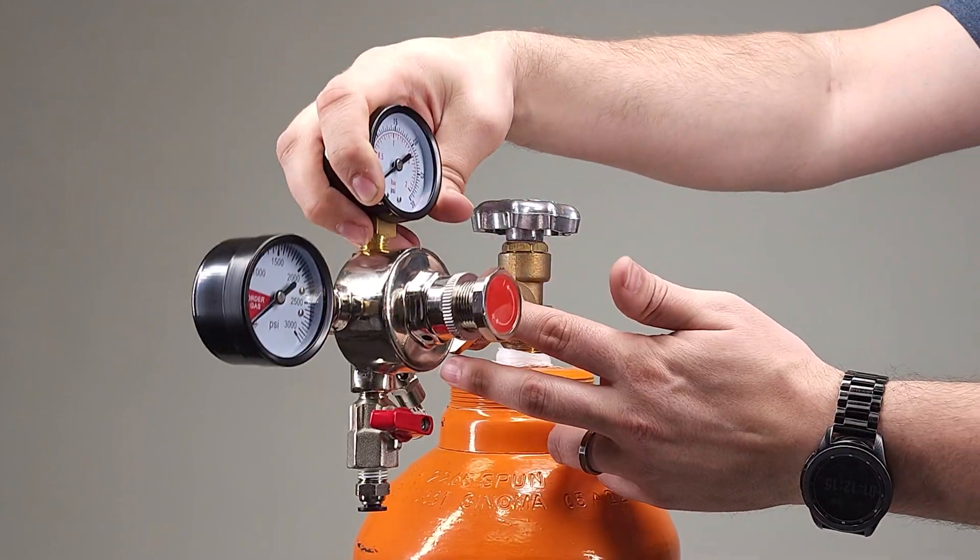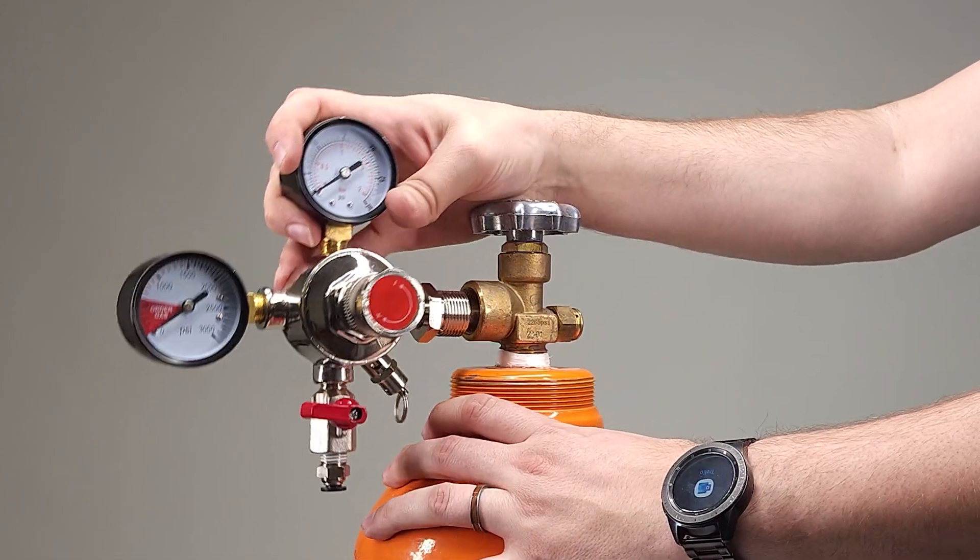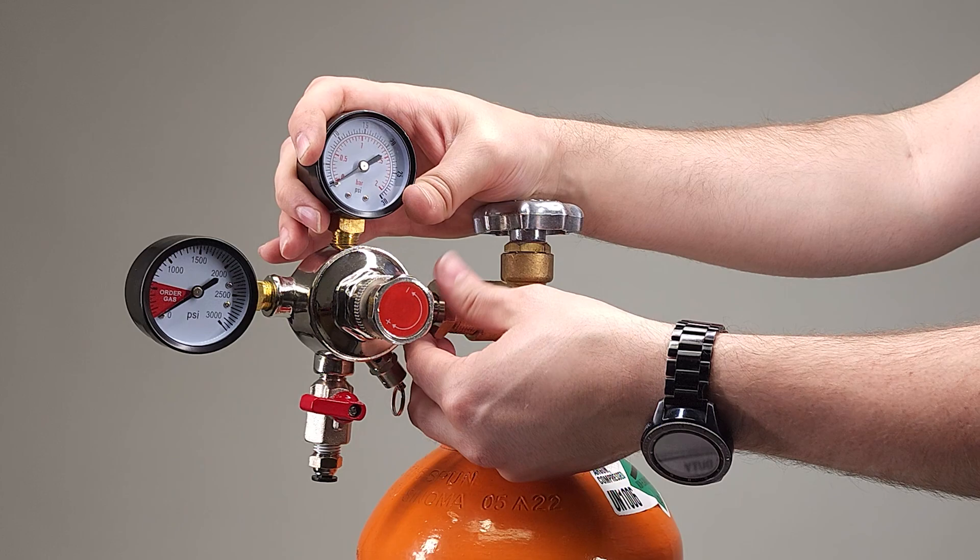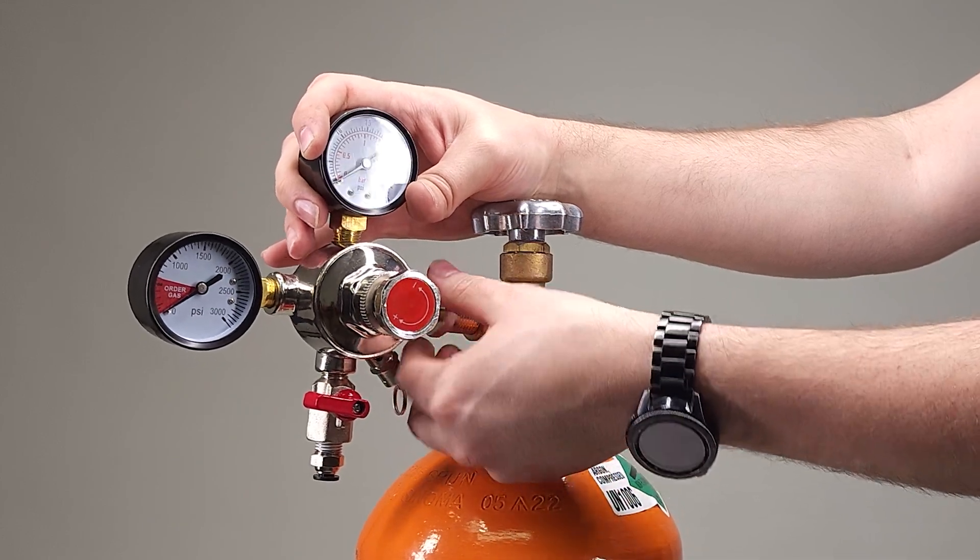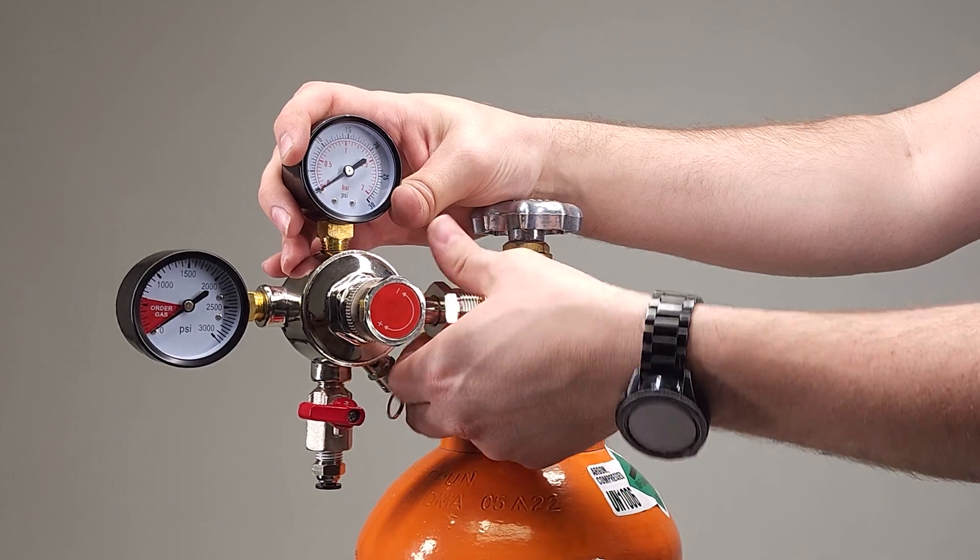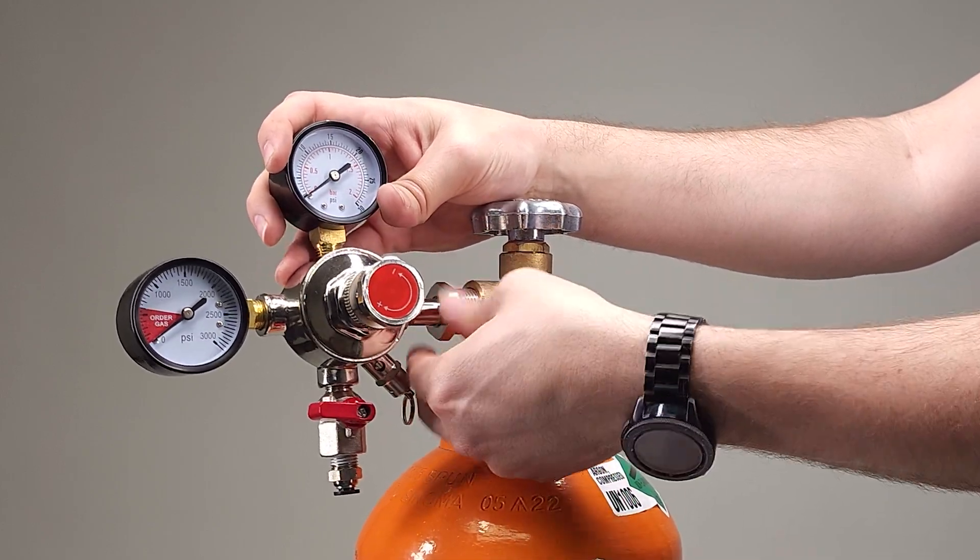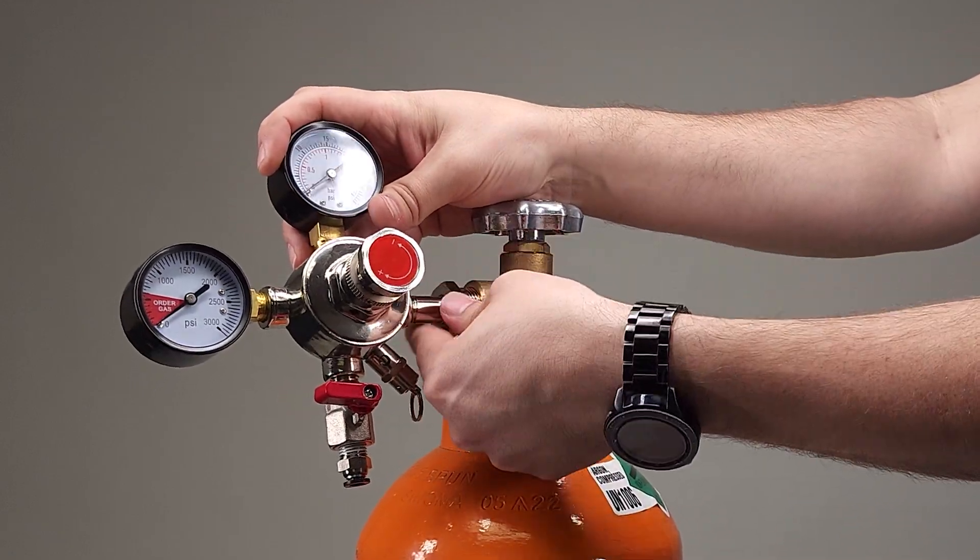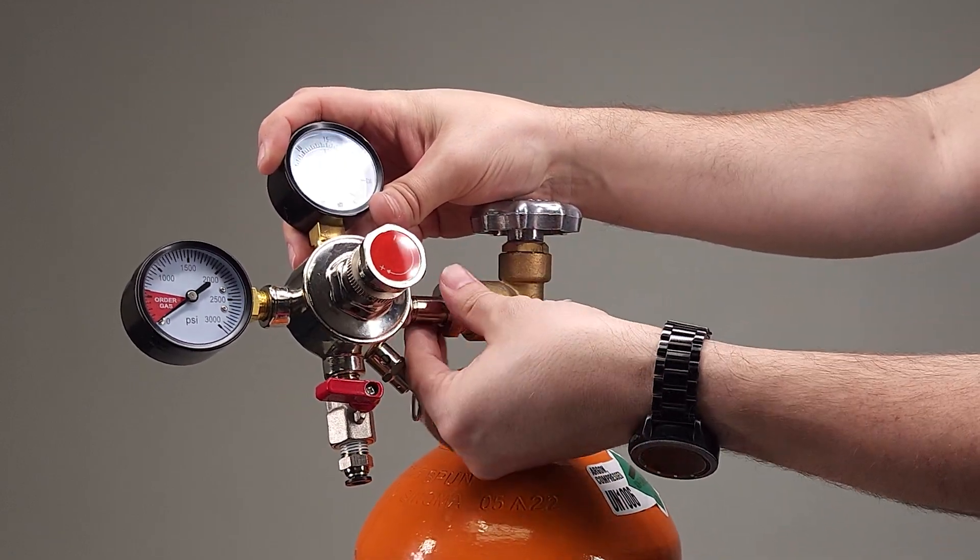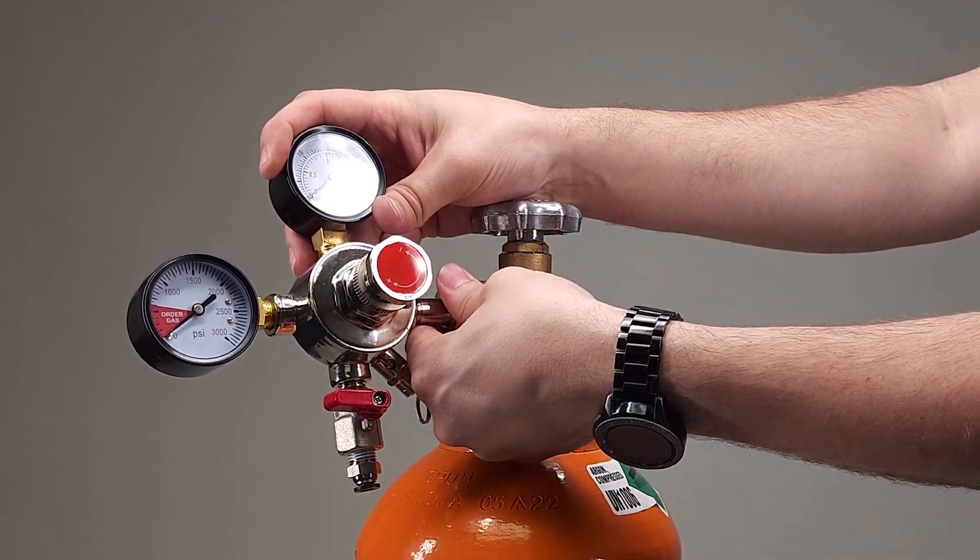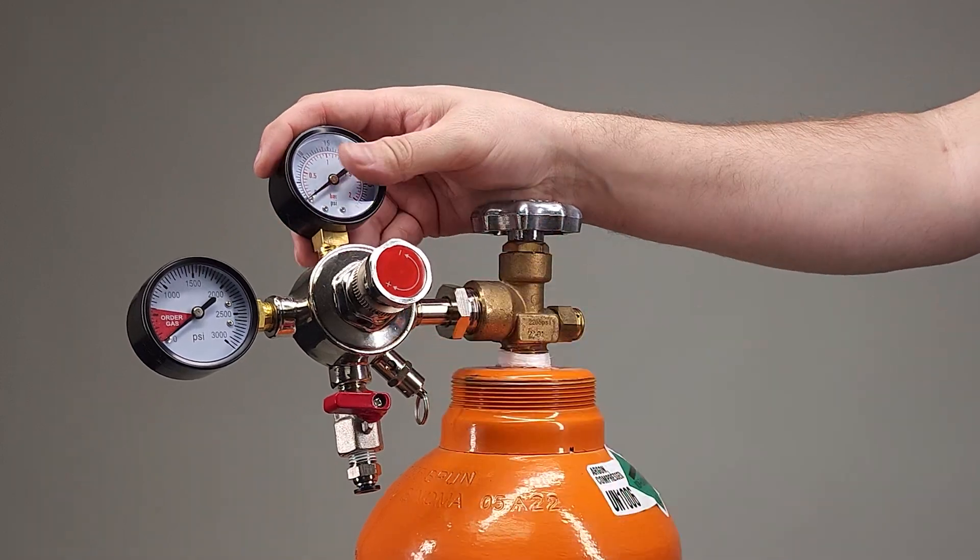So what we are going to be doing is inserting this, and we'll notice that there's a lot of play. So what we're going to do is, by hand, turn this until we can't anymore. And I'm supporting the weight of the regulator with my opposite hand.